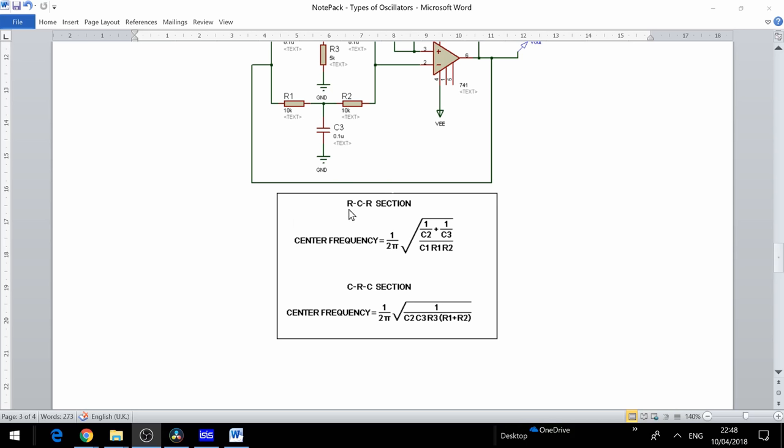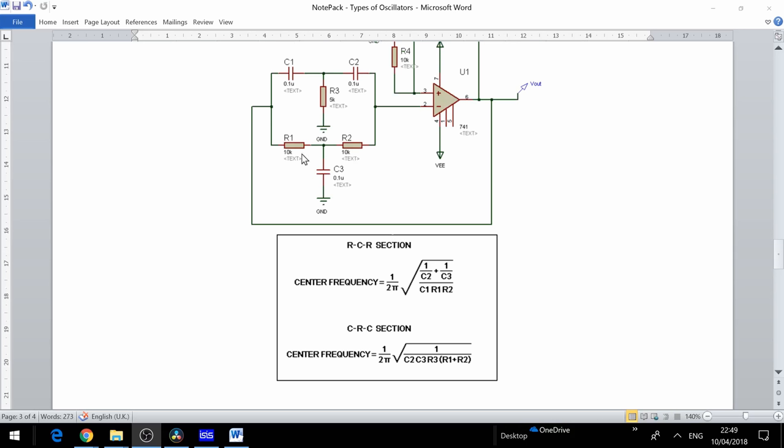Two formulas are used to determine the desired frequency. We need to calculate both for the RCRT section and the CRCT section. These use slightly different formulas where we have center frequency equals 1 over 2 pi square root of 1 over C2 plus 1 over C3 divided by C1 R1 R2. The CRC section is determined by 1 over 2 pi square root of 1 over C2 times C3 times R3 times R1 plus R2. Both elements should be closely matched, which can make this a difficult circuit to get functioning correctly.